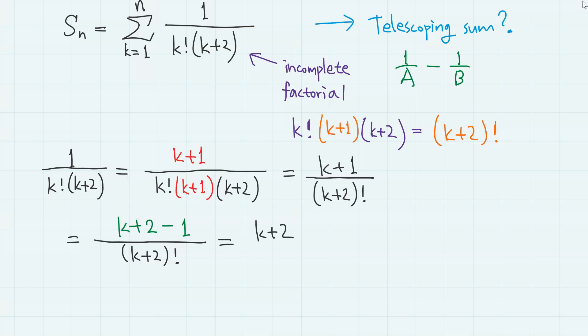which is k plus 2 over k plus 2 factorial minus 1 over k plus 2 factorial. And the first term is simply 1 over k plus 1 factorial. So we have 1 over k plus 1 factorial minus 1 over k plus 2 factorial.